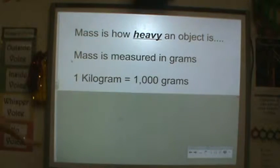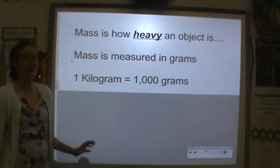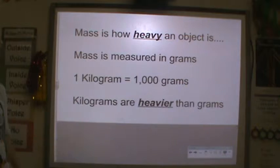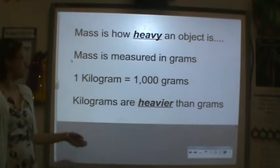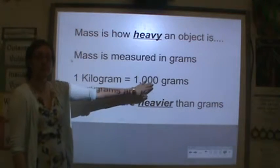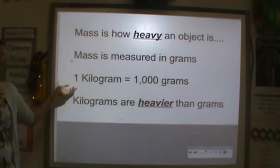One kilogram is equal to 1,000 grams. Kilograms are heavier than grams. It takes 1,000 of these little grams to get to 1 kilogram.